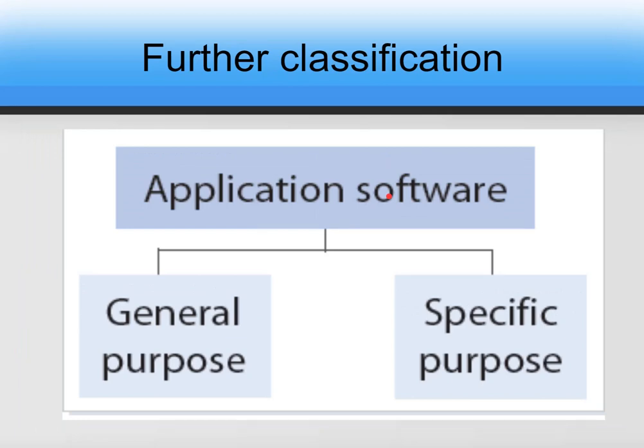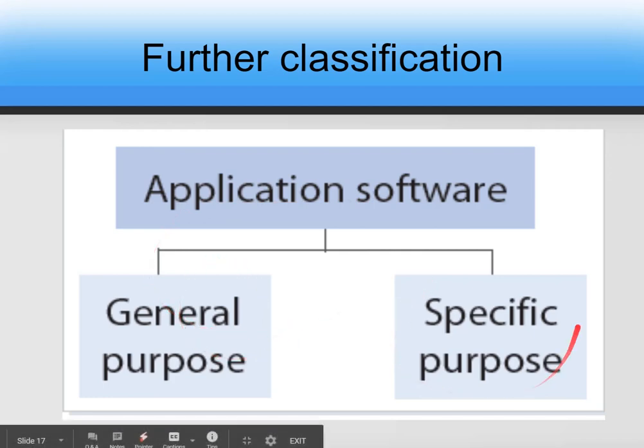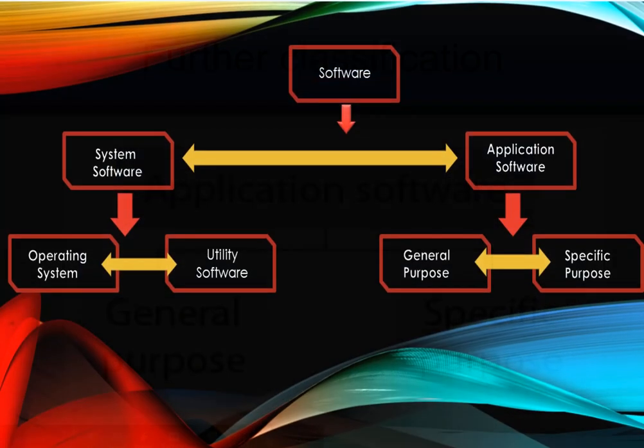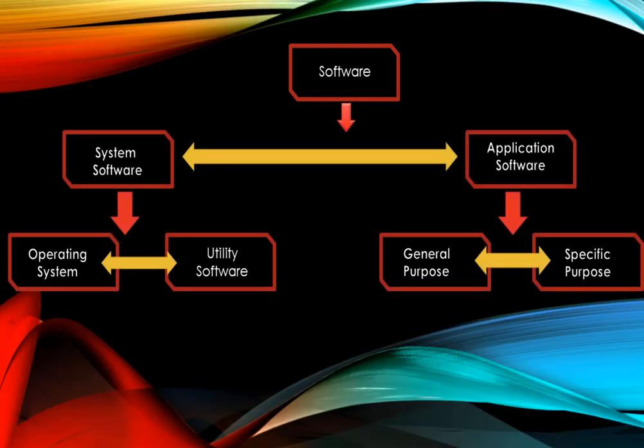Application software is further classified into general purpose and specific purpose softwares. So far the classification has been: softwares → system software and application software. We have already dealt with types of system software — operating system and utility software — and now we are dealing with application software and its types.